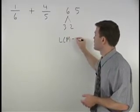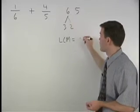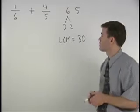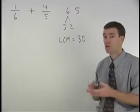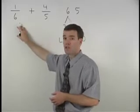is simply three times two times five, or six times five, which is thirty. So our least common denominator for these two fractions is thirty.